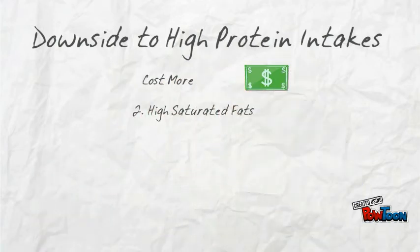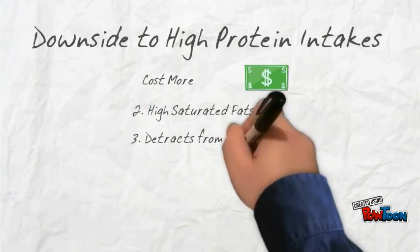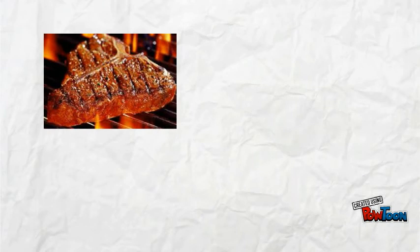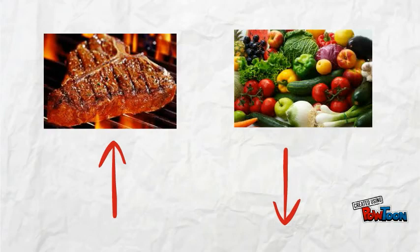The second thing is, most high protein food sources are high in the bad fat, saturated fat, and they also tend to displace all the other foods. So if you are a high meat eater, you tend to not eat a lot of other foods like fruits and vegetables that also have health benefits for you.